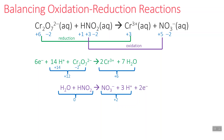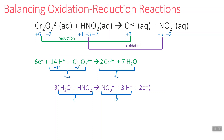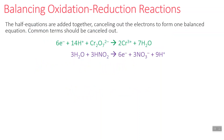Next, we need to make sure the number of electrons produced and consumed is the same. The reduction half reaction has six electrons and the oxidation half reaction has two. To make those numbers match, we multiply the oxidation half reaction by three, giving six electrons — equal to the six electrons in the reduction reaction. Here are the two half equations with the oxidation equation multiplied by three.